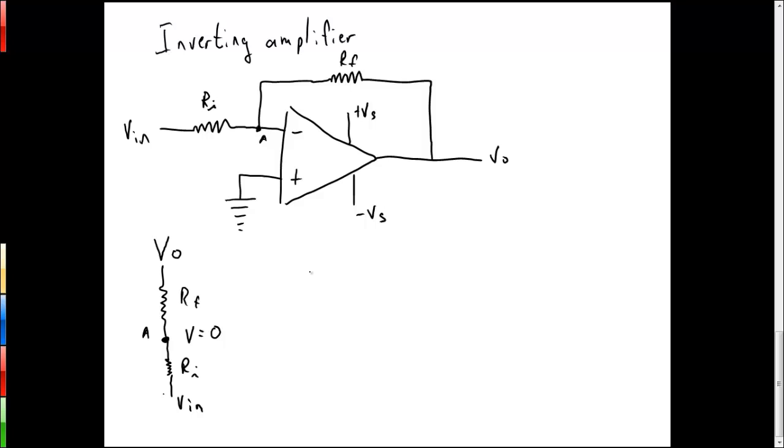And we can write that the current through RF is just VO divided by the value of the resistor RF. That has to be equal to the current through RI, which is just minus V in over RI, because the voltage drop is zero minus V in.